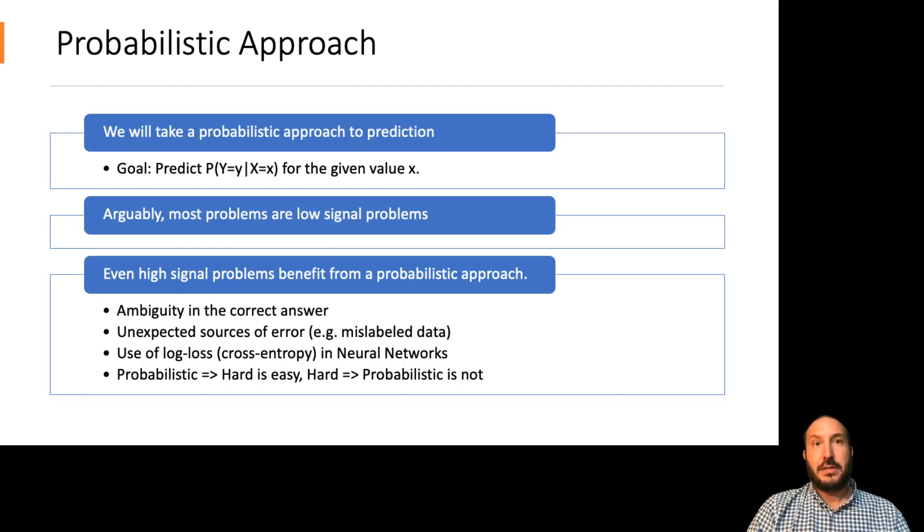A third point I'll make is that log loss and what's also called cross entropy is used as the training metric typically in neural networks. So this is a probabilistic approach. The output of the neural network is actually a probability distribution that later gets thresholded into a hard prediction. And so even in some of these high signal problems, they will make use of this probabilistic approach. And finally, as we demonstrated earlier, going from a probabilistic prediction to a hard prediction is quite easy. But if you start with a hard prediction, it's hard to recover the probabilities or the rankings underneath it. And so it's always better to start with the probabilistic prediction and only threshold that if and when it's necessary.